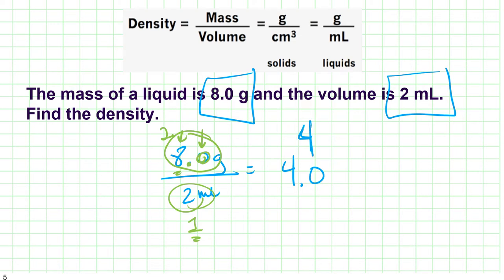So our final answer is going to be four, not four point zero. Our unit label is still grams per milliliter. This is our final answer.